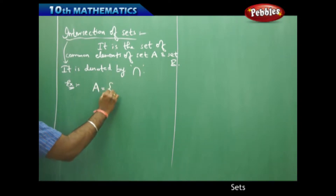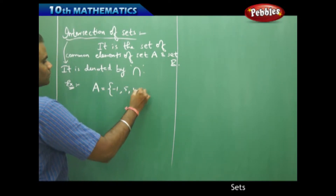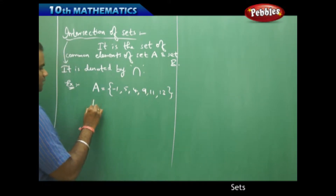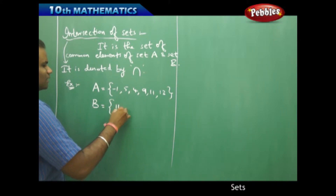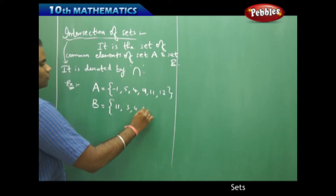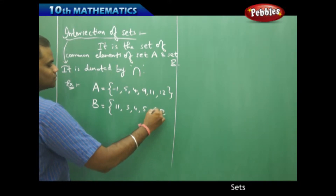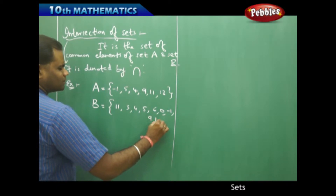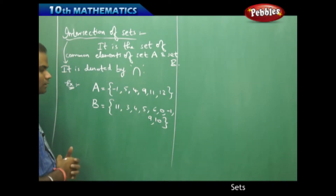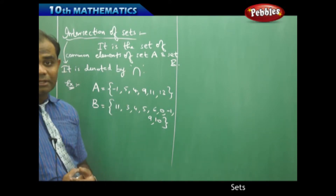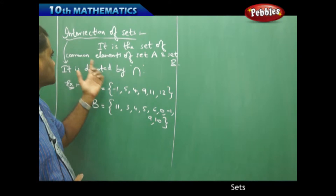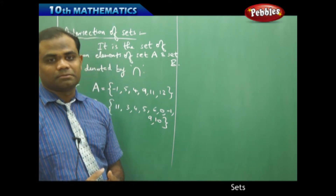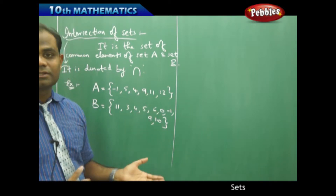If I have set A as {-1, 5, 4, 9, 11, 13} and set B as {11, 3, 4, 5, 6, 0, -1, 9, 10}, I now have two sets with different elements. My definition says to pick the common elements. It is very simple to identify the intersection because I pick the common elements from A and B.